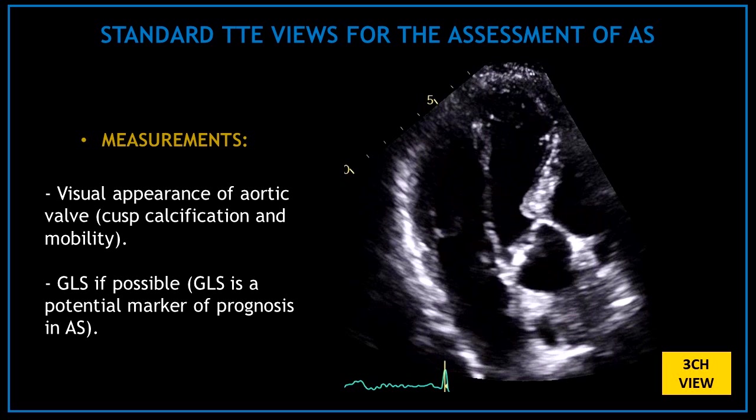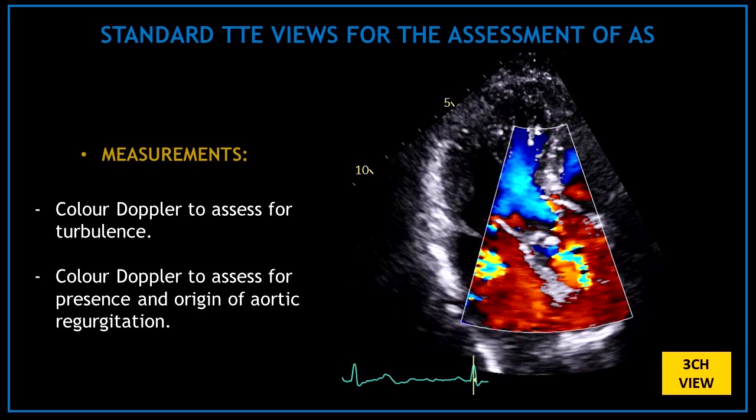Obtain an apical three-chamber view and do the same as in the apical five-chamber view: visually assess the appearance of the aortic valve, the extent of calcification, and the mobility of the cusps. If possible, measure the global longitudinal strain. Use color Doppler on top of the aortic valve to assess for turbulence or for the presence and origin of aortic regurgitation.